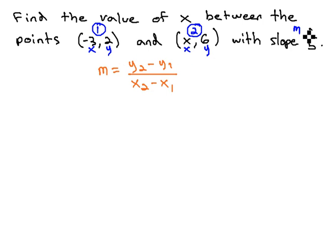The slope, we also use the letter m to represent. So we replace m with what it represents, 2 fifths, equals y2 from the second point is 6, minus y1 is 2, over x2 which is x, minus x1 which is negative 3.